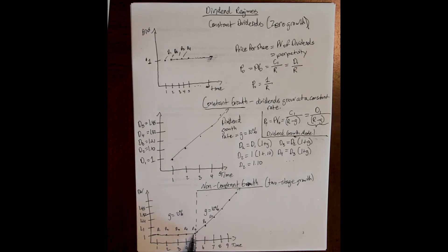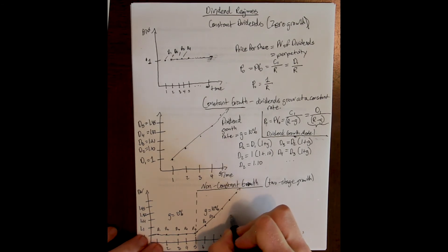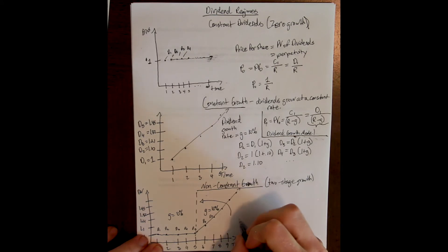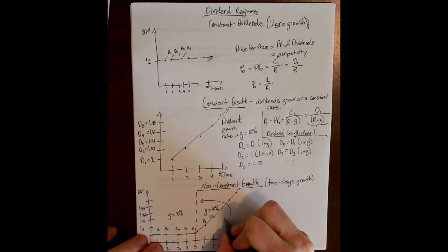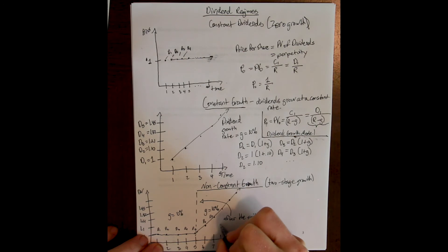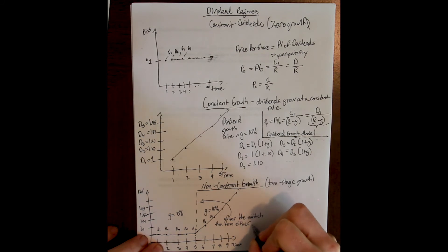This is an example of non-constant growth: a growth rate of 0% for a few years, then an increasing growth rate forever after. The key to being able to value a share in a non-constant regime is that after the switch, whatever the second regime is, the firm either needs to have constant dividends or constantly growing dividends.